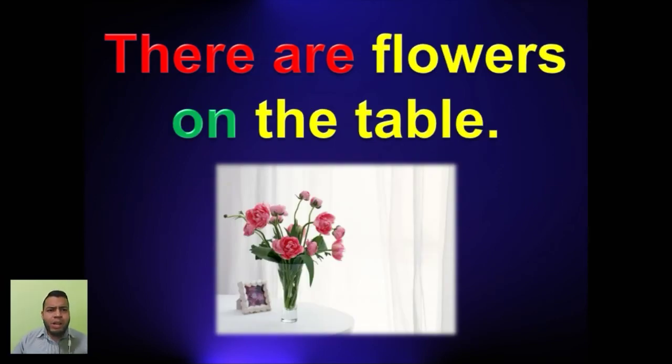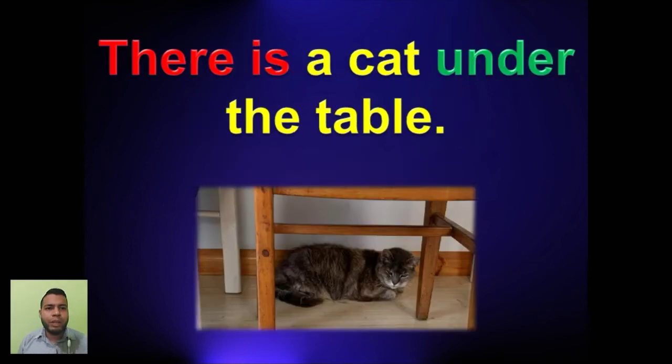There are flowers. There are flowers on the table. Como pueden ver, estas oraciones también las puedo combinar con las preposiciones que estudiamos la semana pasada. Hay flores sobre la mesa. Ven que la preposición on está de un color diferente. There are flowers on the table. Como son varias, utilizo there are.